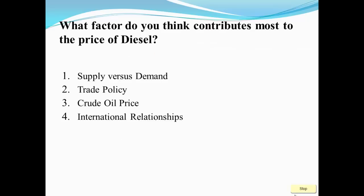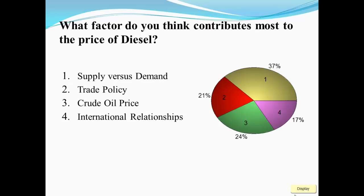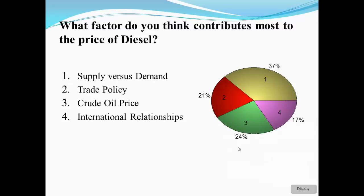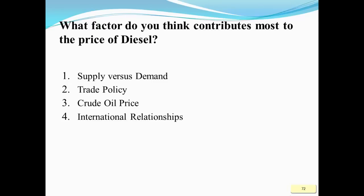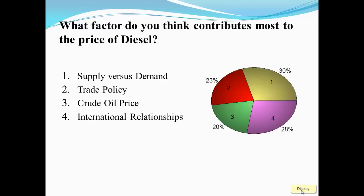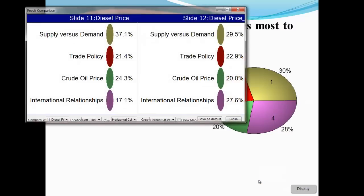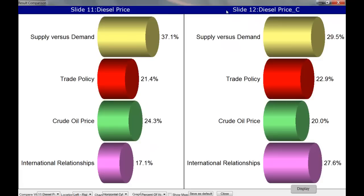We're going to ask this question twice. We'll get the first result, then maybe consider there's been a debate, and ask the question a second time, treating it as an impromptu. We'll do a slide compare with the previous question — on the left-hand side we have the original vote, and on the right-hand side we have the second vote.